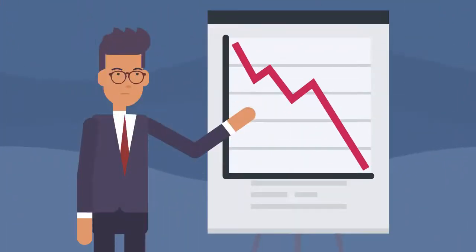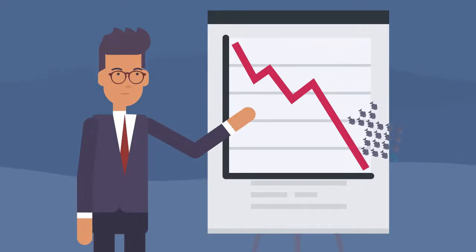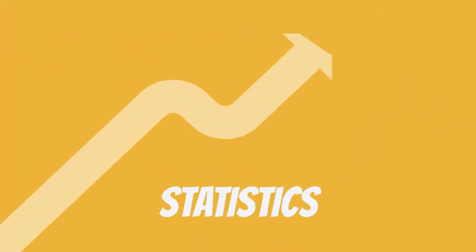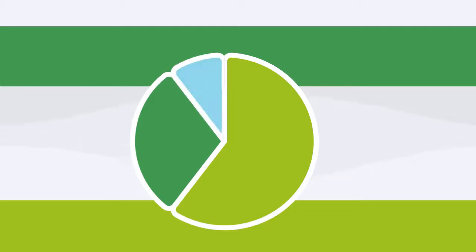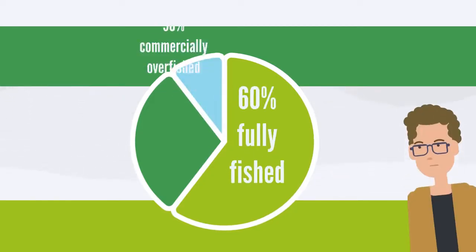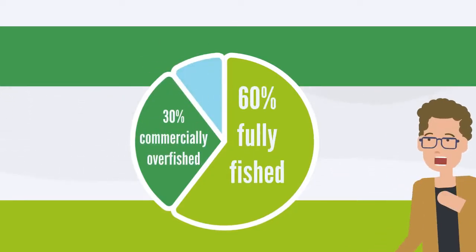Unfortunately, overfishing is also one of the most significant causes of declines in marine life populations. In fact, did you know that over 60% of fish stocks are fully fished? And almost 30% of commercial fish stocks are overfished too.